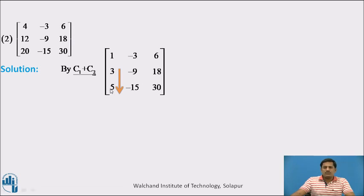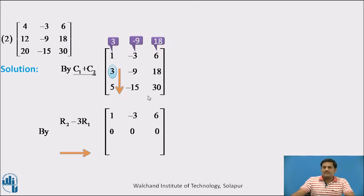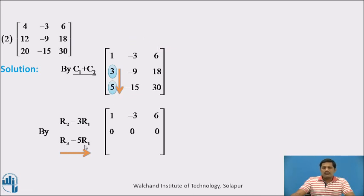Next we reduce these two elements to 0 using two row transformations. First, R2 minus 3R1: multiplying row 1 by 3 gives these three entries, then subtracting: 3 minus 3 is 0, minus 9 minus minus plus 9 is 0, and 18 minus 18 is 0. The row transformation to reduce the 5 to 0 is R3 minus 5R1. Multiplying row 1 by 5: 5 minus 5 is 0, minus 15 minus minus plus 15 is 0, and 30 minus 30 is 0.